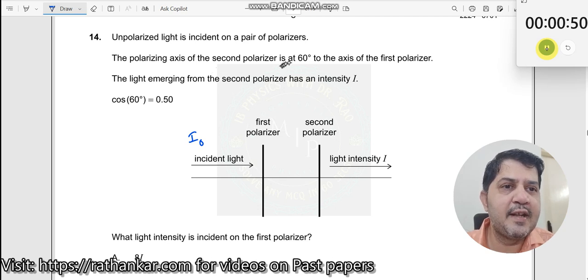The polarizing axis of the second polarizer is 60 degrees to the axis of the first polarizer. So here the axis is at an angle of 60 degrees.